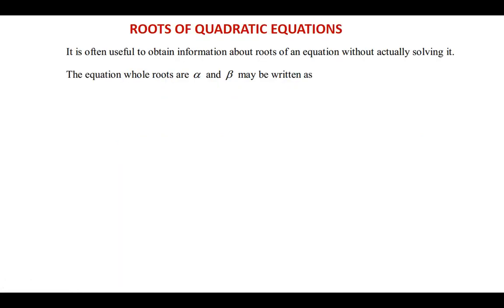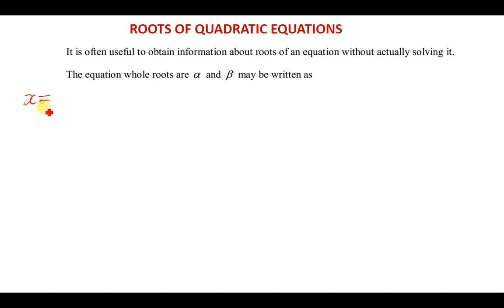So, roots of quadratic equations. The first thing you need to understand about these roots is that they are simply the solutions you always get after solving a quadratic equation. Every time you solve a quadratic equation you always have two answers, and these two answers are the ones we normally call the roots. These are always in the form x equals alpha and x equals beta.